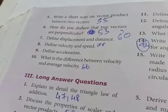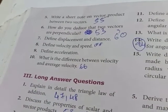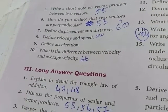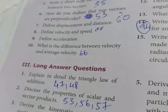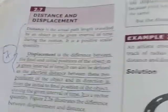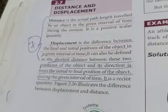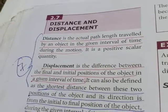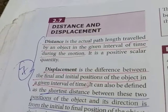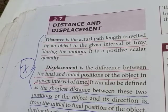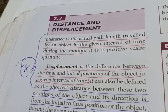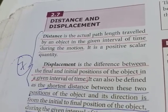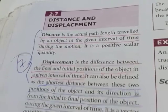Question number 7: define displacement and distance — answer on page number 60. Distance is the actual path length travelled by the object. You can see both definitions on page number 60.